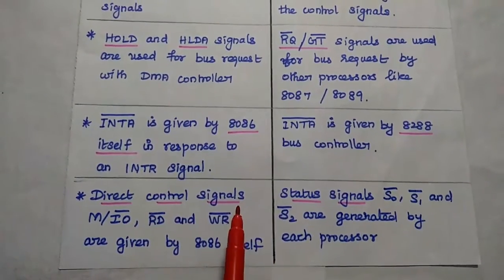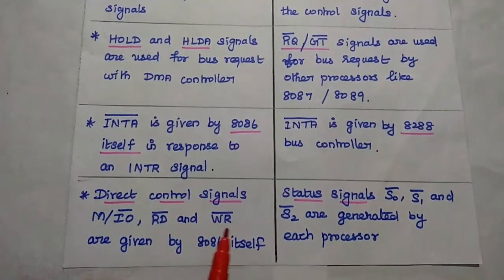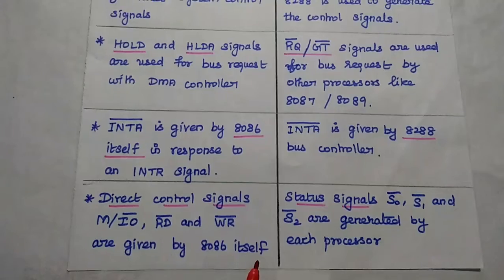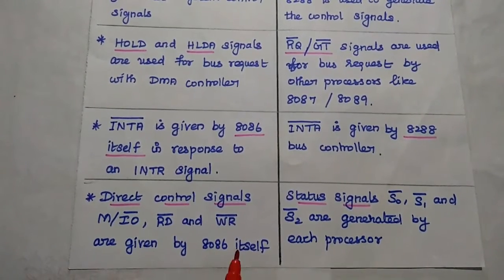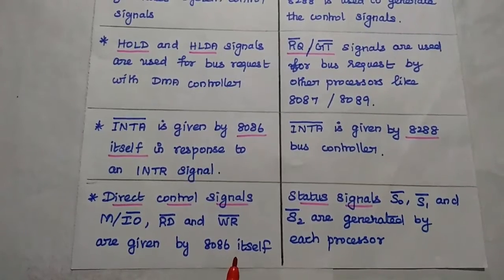All direct control signals like memory or input-output, read bar, write bar are given by 8086 processor itself because in minimum mode only one processor, that is 8086 alone, is used.